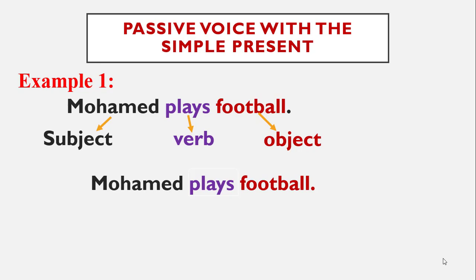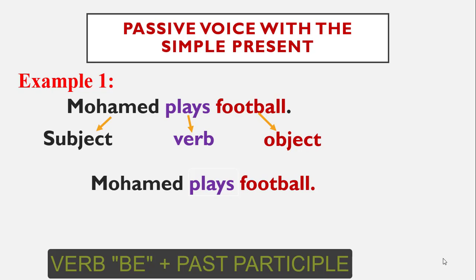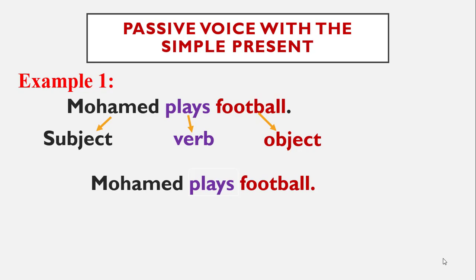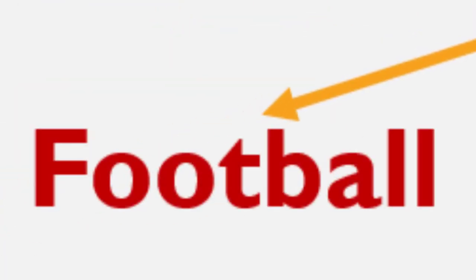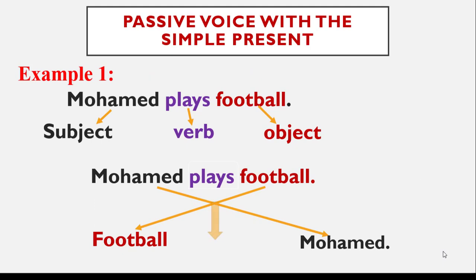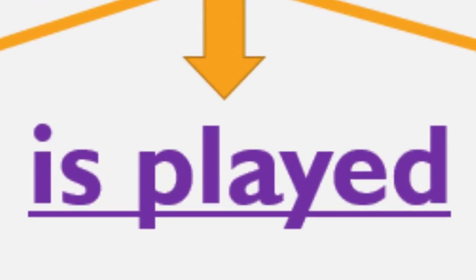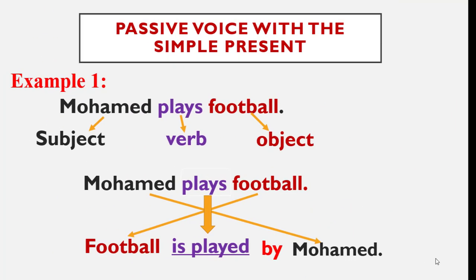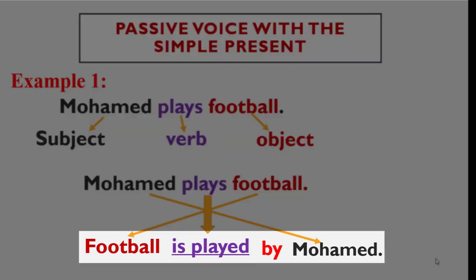In order to change it into the passive voice, we apply some rules. Remember: verb to be plus past participle. Football is the object and it becomes the subject, and vice versa — Mohammed is the subject and becomes the object. Football is singular so we use is plus the past participle of play, which is played — a regular verb. Don't forget by Mohammed, the person who did the action. So the final answer is: football is played by Mohammed.